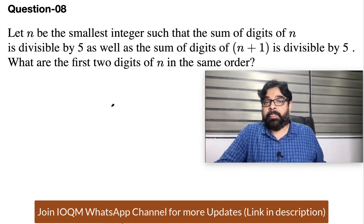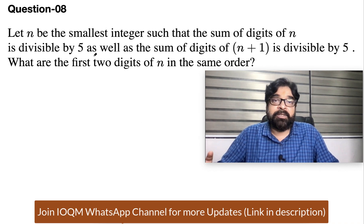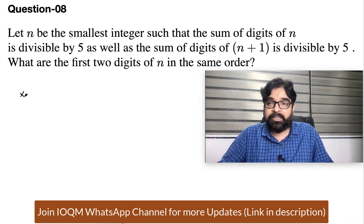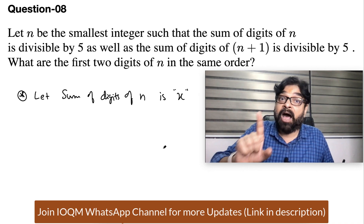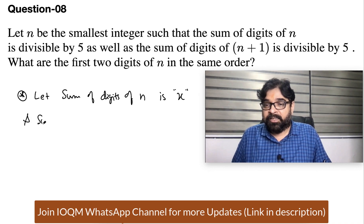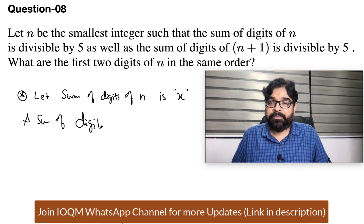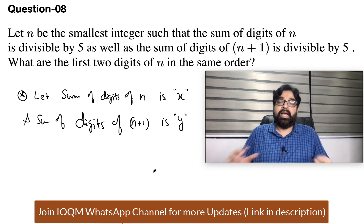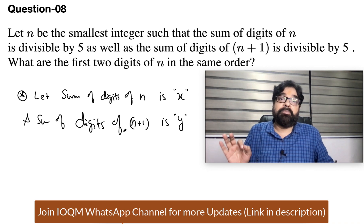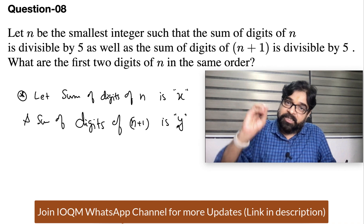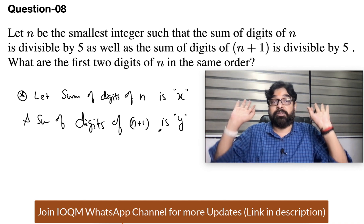I do not know maybe I am wrong but what I feel they should mention that n is positive integer or maybe they should say n is natural number but they did not mention. Why they don't mention that will come once they release the key but we will take n positive and we'll solve it. Let sum of digits of n is x and sum of digits of n+1 is y. 100 percent x must be divisible by 5, y must be divisible by 5, and x minus y should be also divisible by 5.